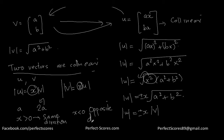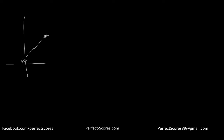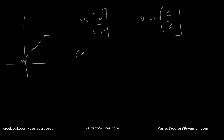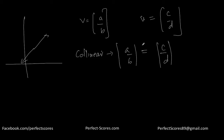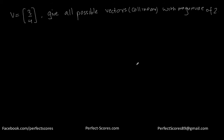Understand that collinear vectors need not have the same direction — two vectors can be collinear and have opposite directions as well. So for two vectors (a, b) and (c, d) to be collinear, the condition is: |a/b| = |c/d|, meaning they should have the same slope, disregarding the sign completely.